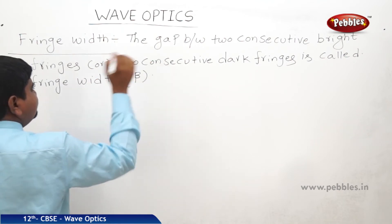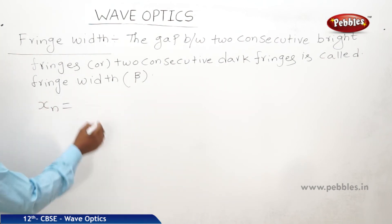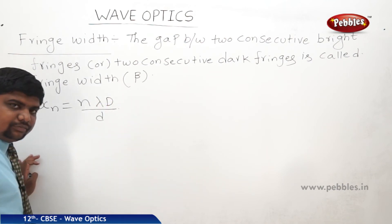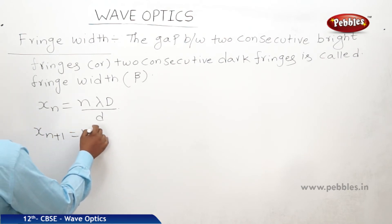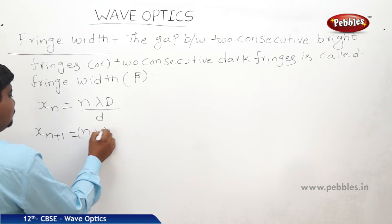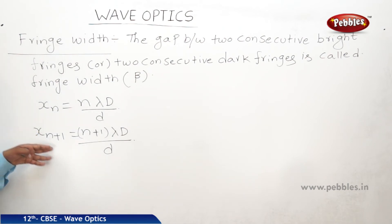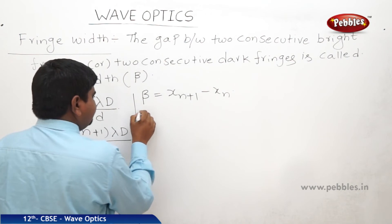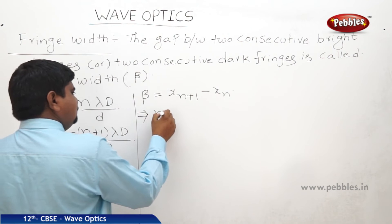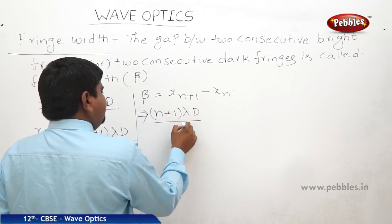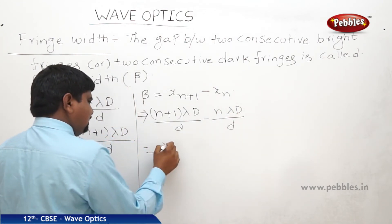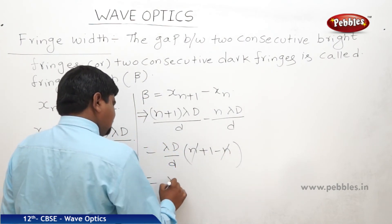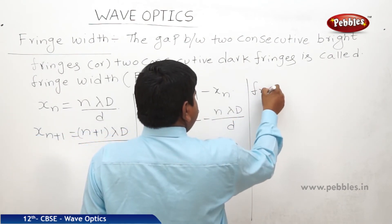Fringe width is denoted by beta. We know the nth bright fringe is at n lambda D by D, and the (n+1)th bright fringe is at (n+1) lambda D by D. Fringe width is beta equals x(n+1) minus xn. Substituting: (n+1) lambda D by D minus n lambda D by D. Taking lambda D by D as common gives (n+1) minus n, which cancels to give fringe width beta equal to lambda D by d.